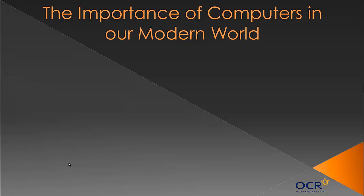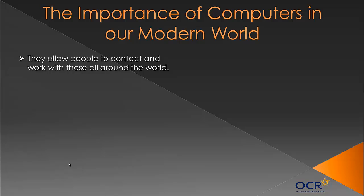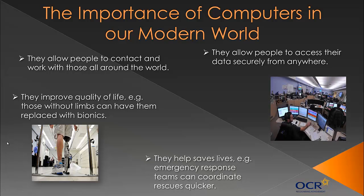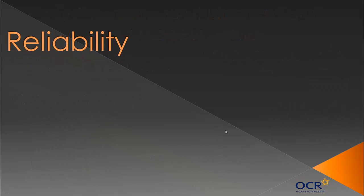Computers are obviously essential to our modern world and you need to know some reasons — this might come up as a longer-mark essay question worth five or six marks. For example, computer systems improve the quality of life for people: I've got an image of a man with a bionic leg, which is a complex computer system that may improve his quality of life. Computer systems also help save lives — here's a picture of an ambulance control room where someone is using computer systems to coordinate emergency responses.